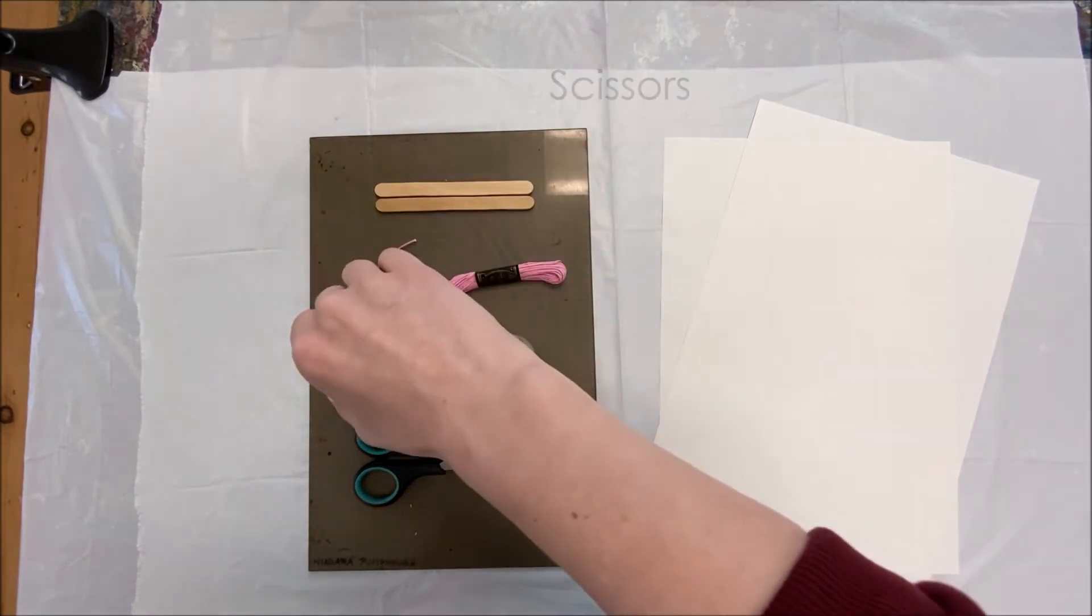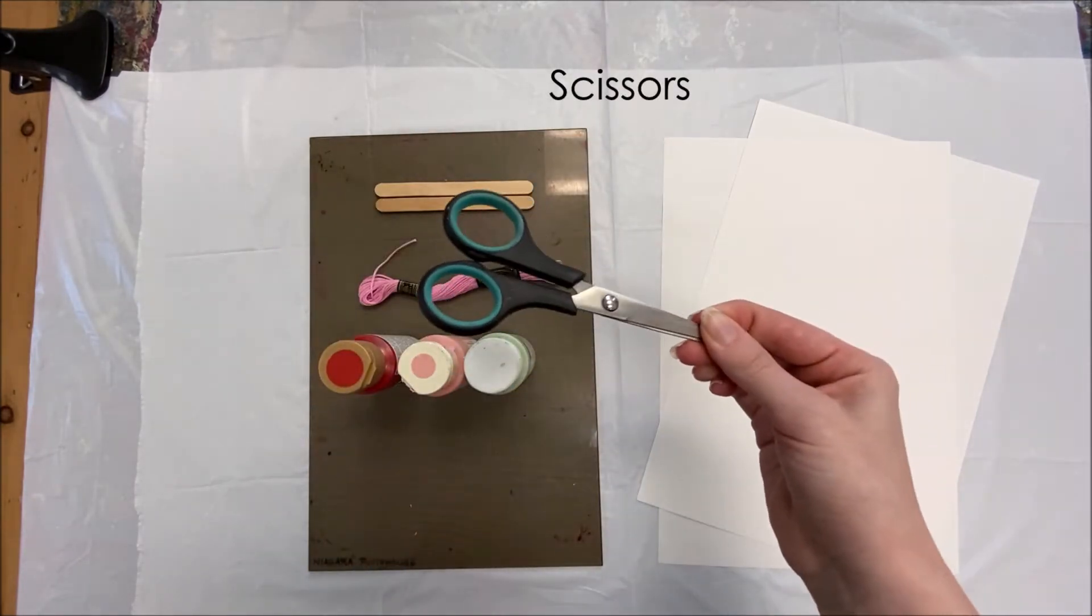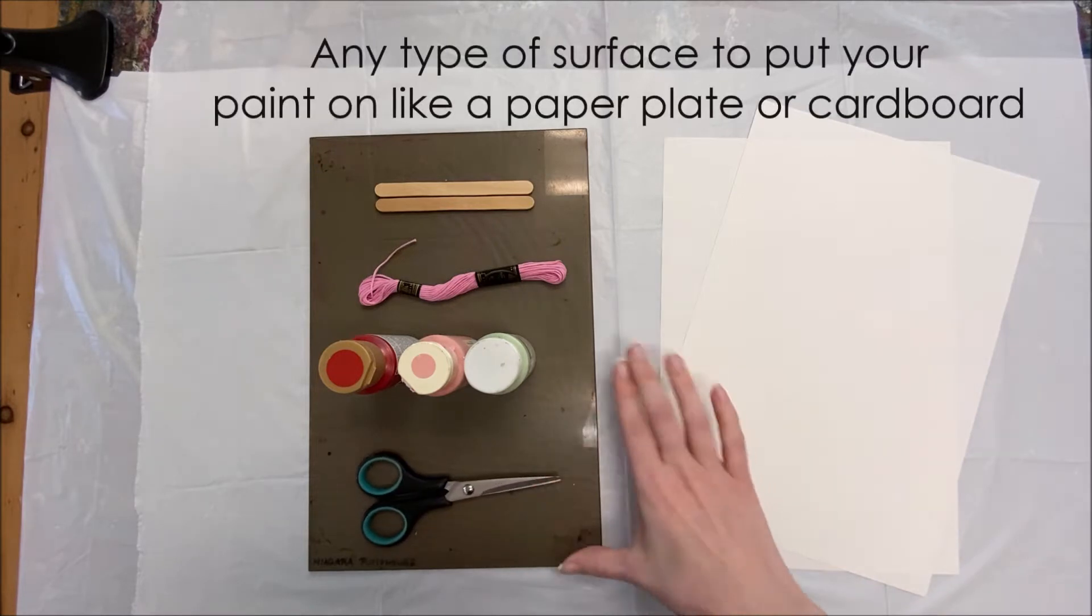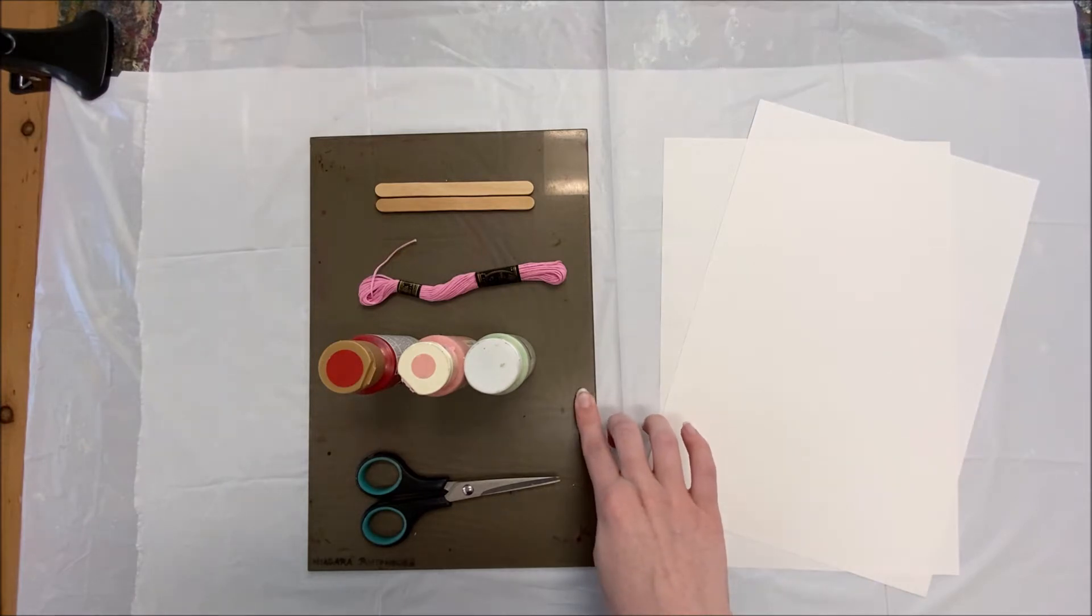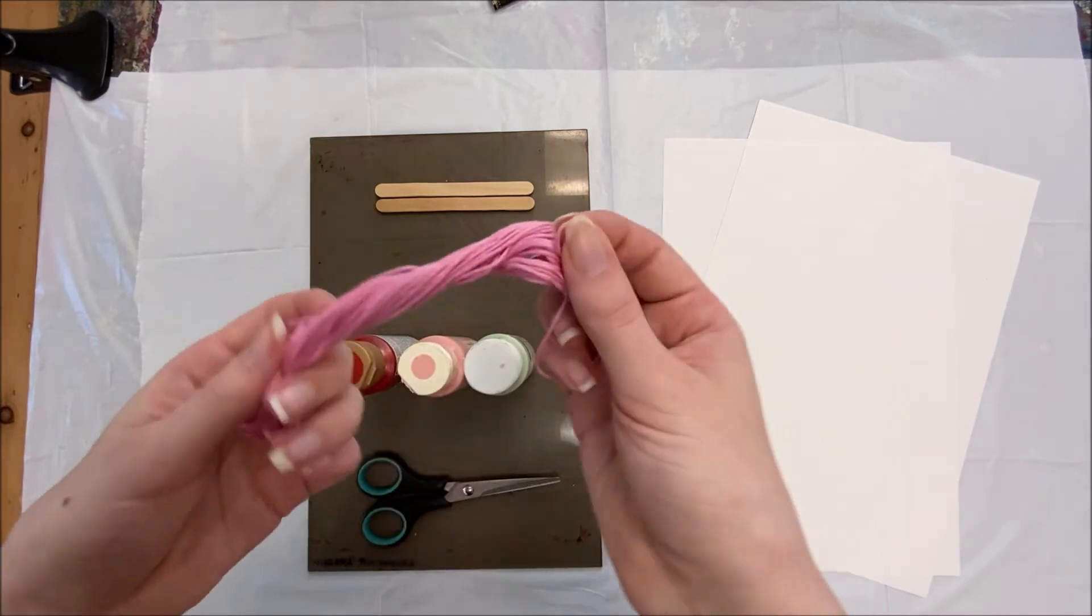You'll also need some scissors and any type of surface to put your paint on. I have this glass plate. You can use a paper plate or spare cardboard. We're going to start by cutting three pieces of string, one for each flower that you make.